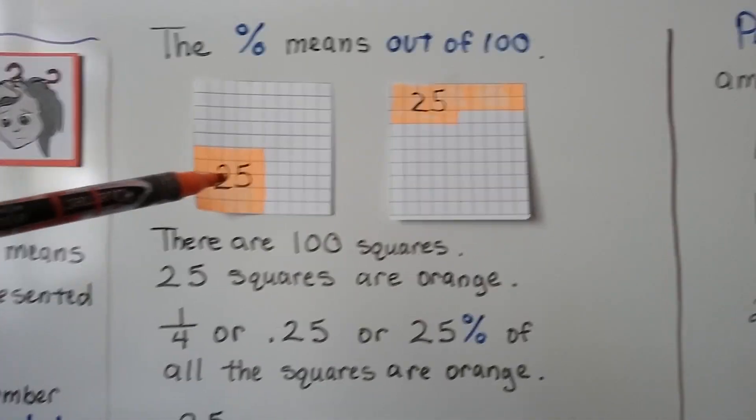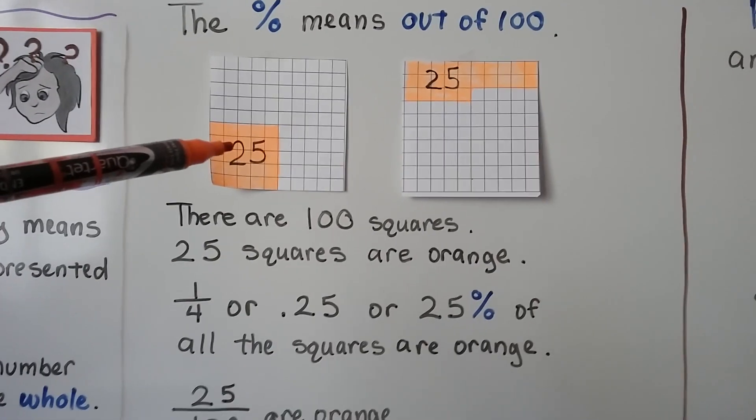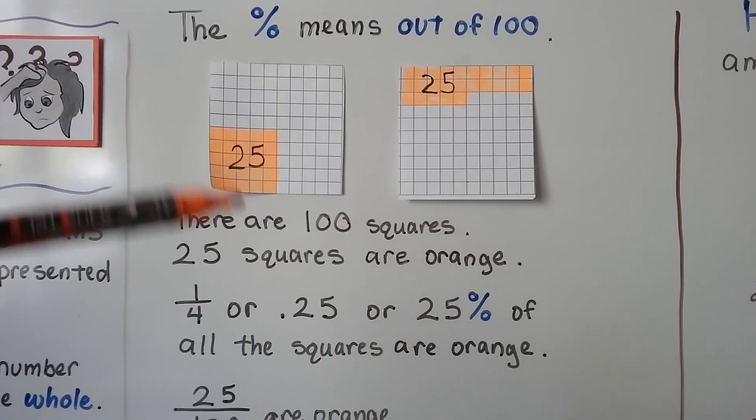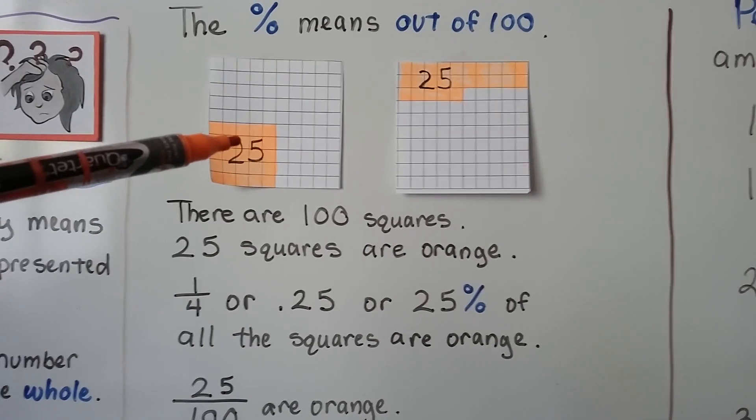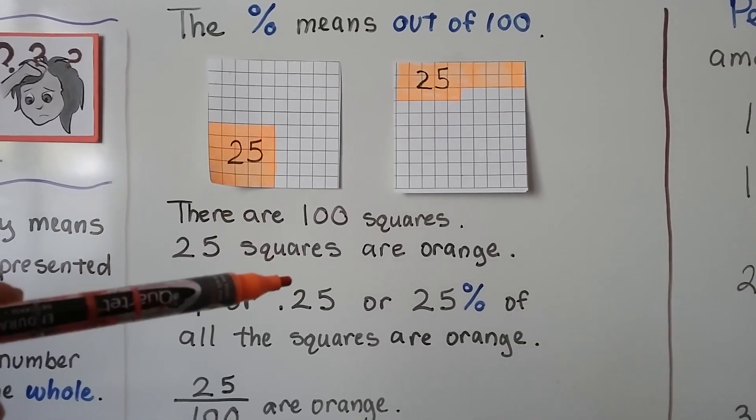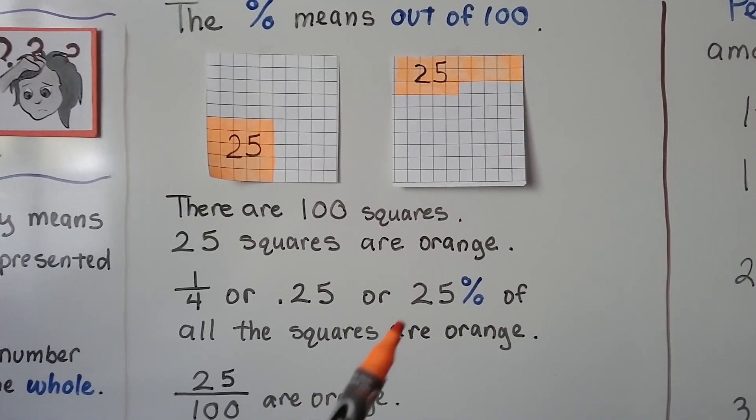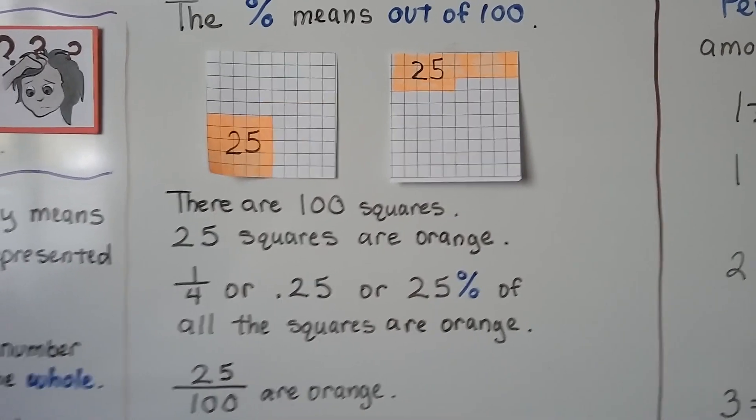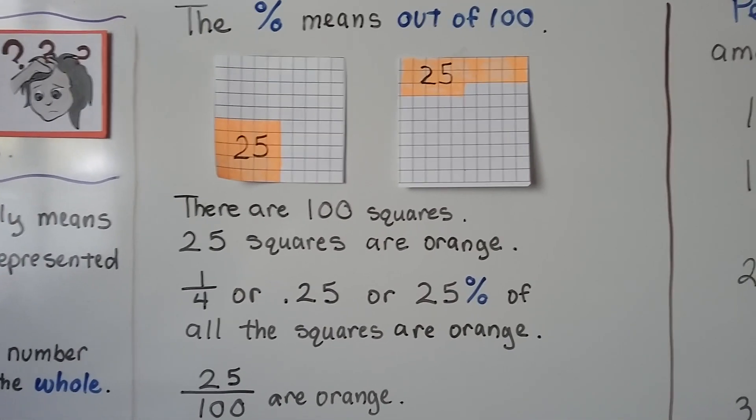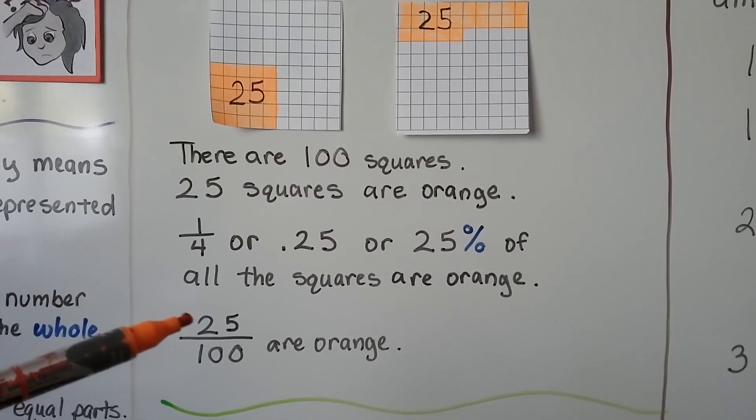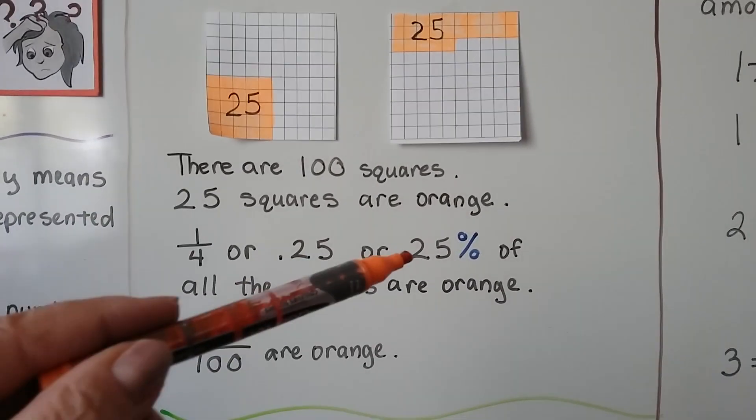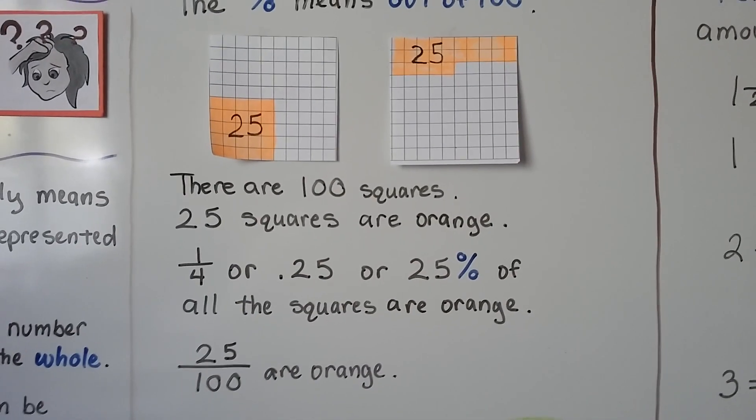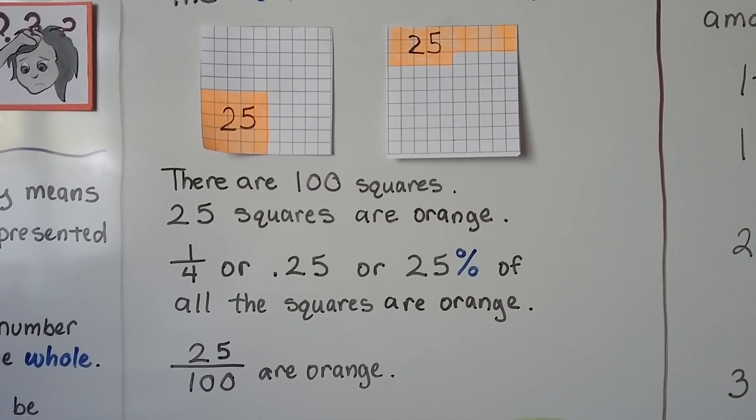25 squares are orange. So 1/4 of them are orange, like 4 quarters and a dollar. Or 0.25 as a decimal are orange, 25 out of 100, 25 hundredths. We can also say 25% of all the squares are orange. 25 one hundredths are orange because it means part of 100. That means 25% are orange.